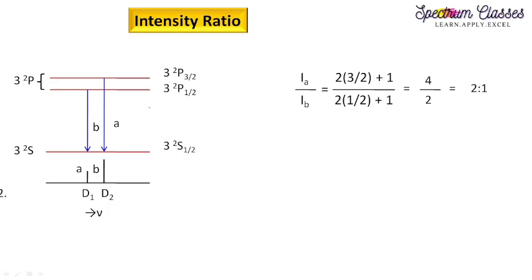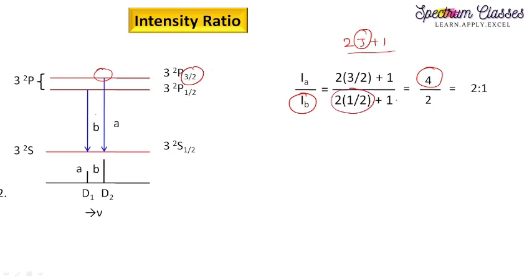Here is the example with two lines only. We have IA and IB, and the quantum weight is 2J plus 1. The intensity IA, starting from the level with J equals 3/2, gives 2J plus 1 equals 4. For IB, J equals 1/2, so 2J plus 1 equals 2. Therefore IA to IB equals 4 to 2, which simplifies to 1 is to 2. So for sodium D lines we have the intensity ratio D1 to D2 equals 1 to 2, which also correlates with the subscripts — D2 is two times the intensity of D1.